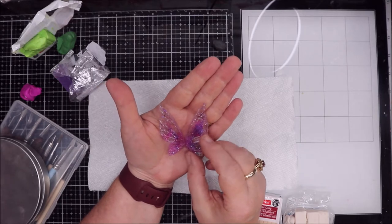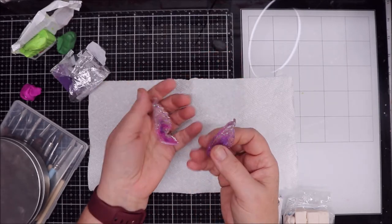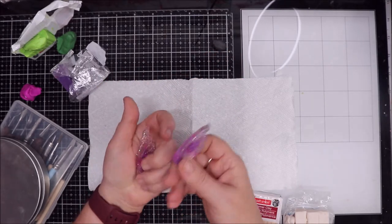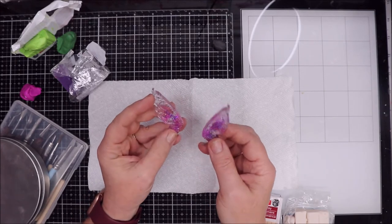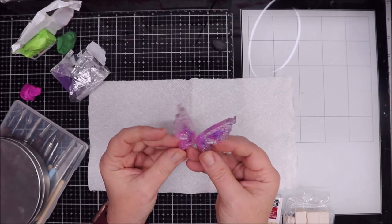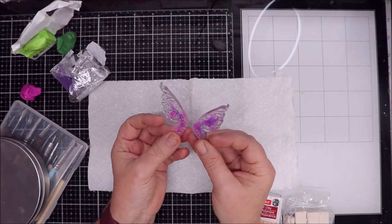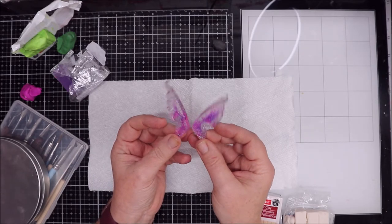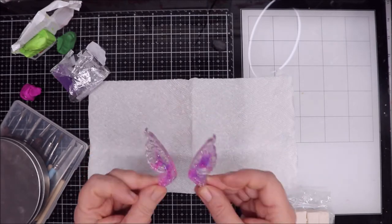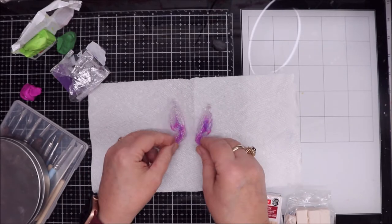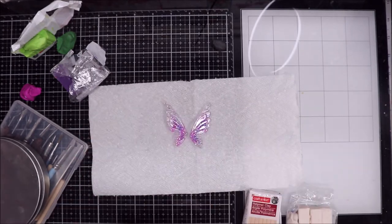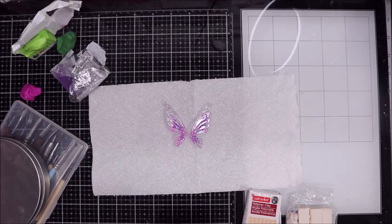The minute that I got the mold from my Sophie and Toffee box for July, I knew that I was going to use these wings to make a fairy. I really do like the colors of the wings, I think they're really pretty.